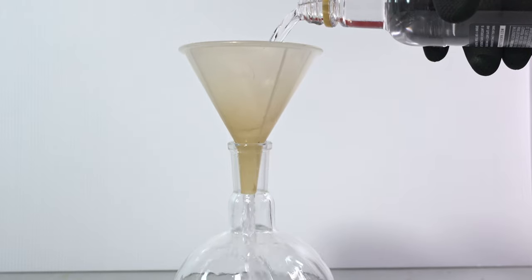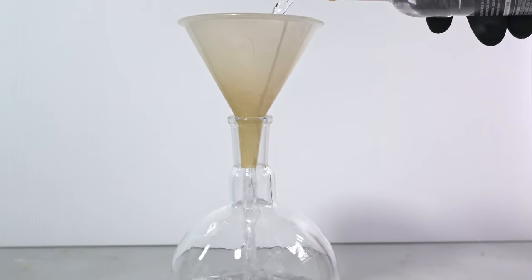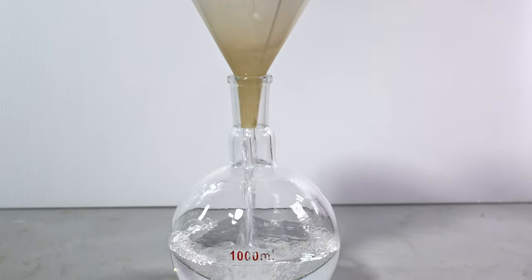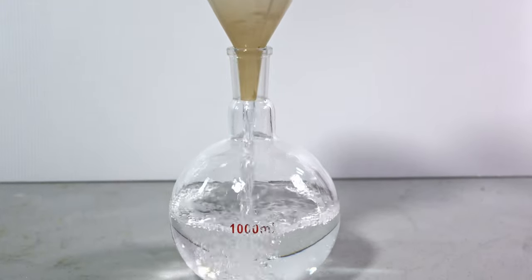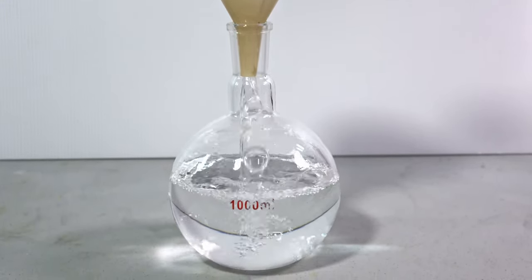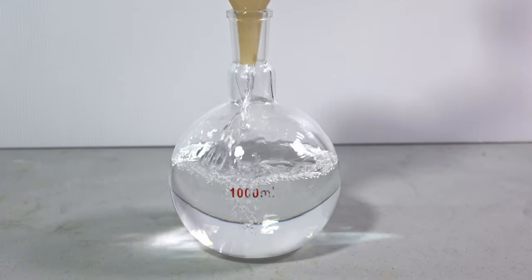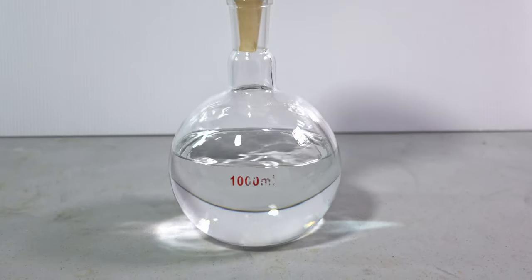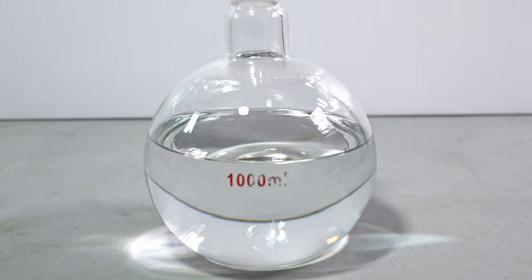The first thing we're going to do is pour out our Everclear into a boiling flask. We have to concentrate it to at least 90% so that ether synthesis will proceed more rapidly. Having all this excess water will impact the yield of our ether. Notice how refractive the Everclear is. That's the ethanol part in our solution.